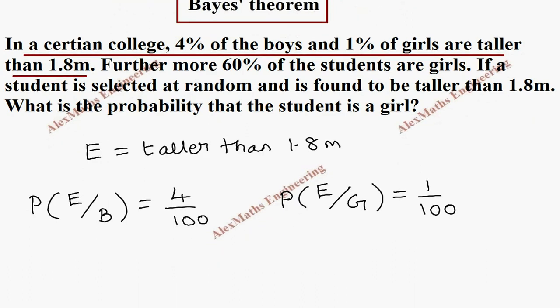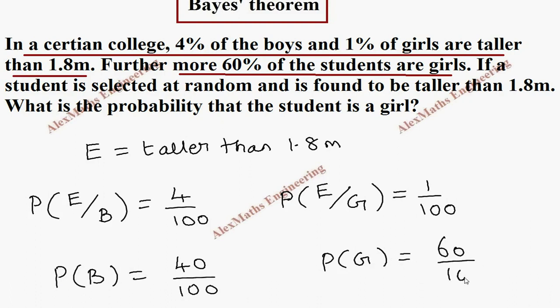They are also given, further more, 60% of the students are girls. So it means, 40% are boys. So, the probability of boys is 40 by 100. And probability of girls is 60 by 100.